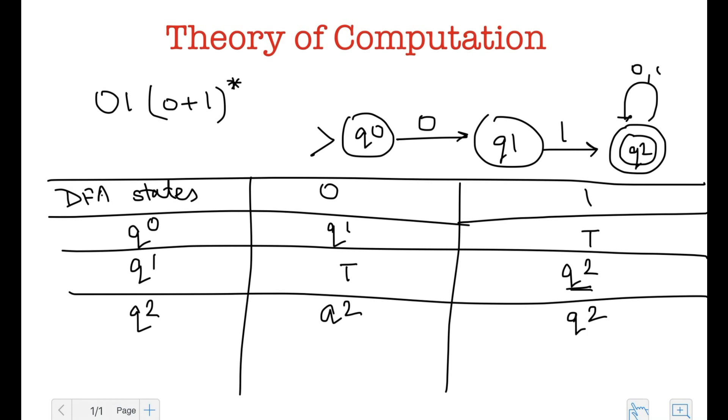And the reason it's called a trap state or a dead state is because from the trap state, there is no way that the string is going to go back to the rest of the automaton. There's no way the string is going to go to an accepting final state. So the trap state just loops to itself on a zero as well as a one. And if I had more characters in my alphabet, the trap state would just keep looping on to itself on all the input characters.